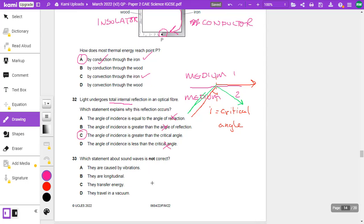Okay, and let's do 33. Which statement about sound waves is not correct? So sound waves, and we're looking for something incorrect. They're caused by vibrations. Well, that is correct. So I'll put an X there. That's not what we're looking for. They are longitudinal. No, that is correct. They transfer energy. Yep, they do transfer energy. They travel in a vacuum. That is the incorrect answer. They do not travel in a vacuum. So that is therefore not correct. So that is our correct answer.